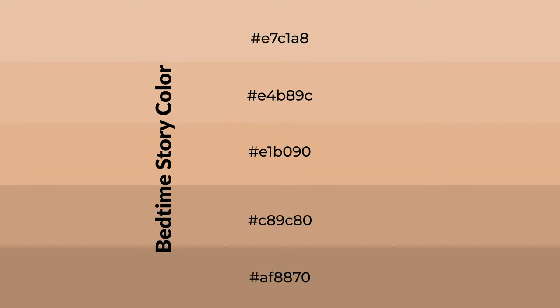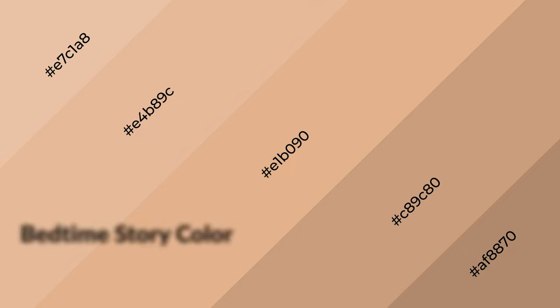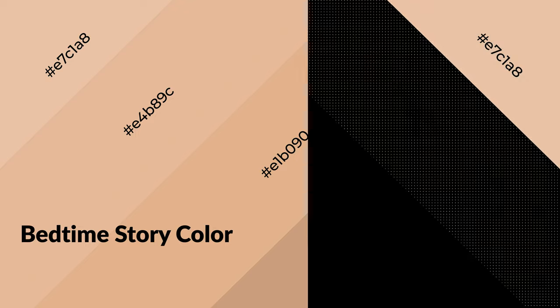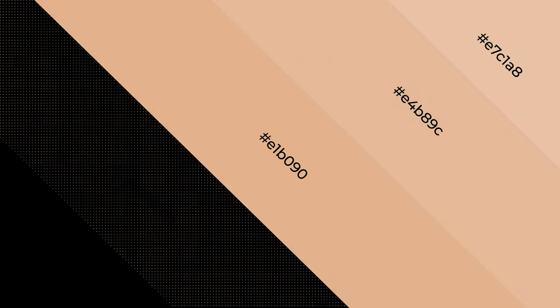To generate shades of a color, we add black to the color. Shades are used in patterns, 3D effects, and layers, and they create depth and drama. Bedtime Story is a warm color that emits cozier and active emotions. Warm colors are symbols of warmth, fire, heat, and sunshine.